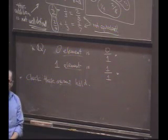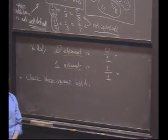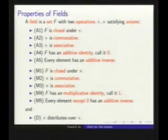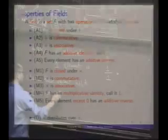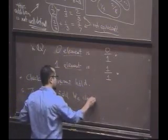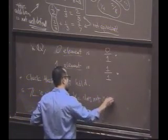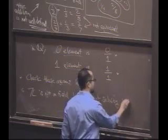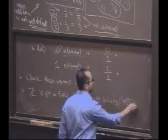Are the integers a field? What properties do the integers not satisfy? Why are the integers not a field? Good. Z is not a field because it does not satisfy what?